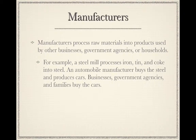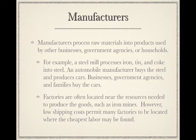An automobile manufacturer buys the steel and produces cars. Businesses, government agencies, families, and sometimes voluntary service agencies buy the cars. Factories are often located near the resources needed to produce the goods, such as iron mines. However, low shipping costs permit many factories to be located where the cheapest labor may be found rather than nearest the materials needed.